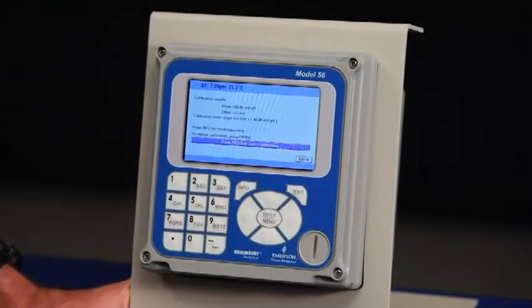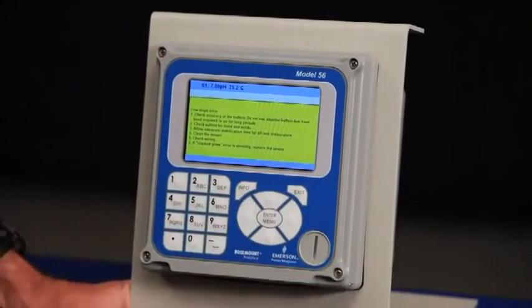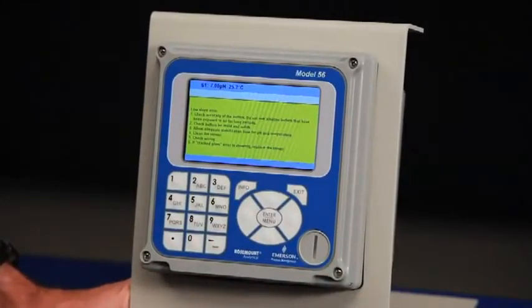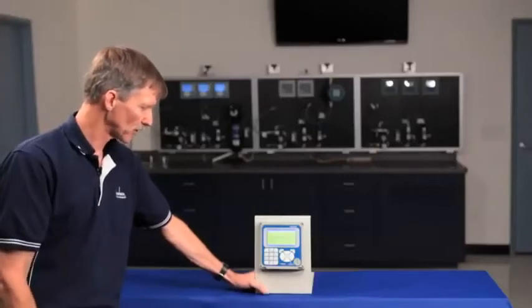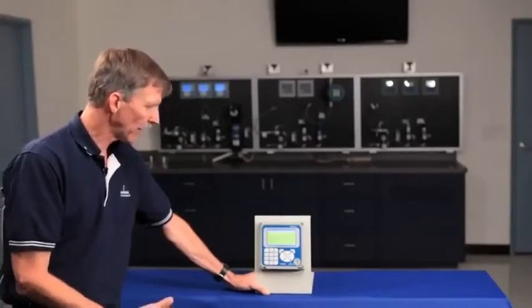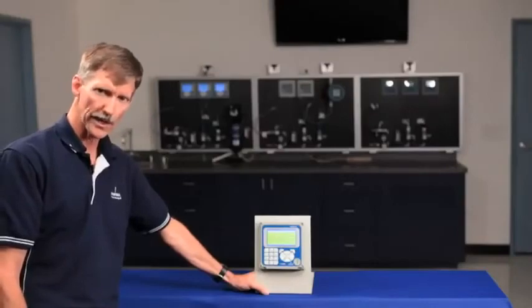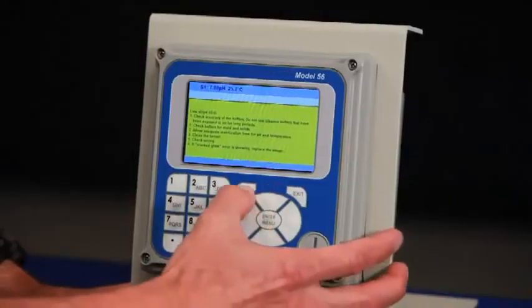At any point during the calibration routine, the technician can push the information button as a troubleshooting screen. And in this case, I'm displaying a screen that shows advice on how the technician can resolve a problem that was actually detected during the calibration.